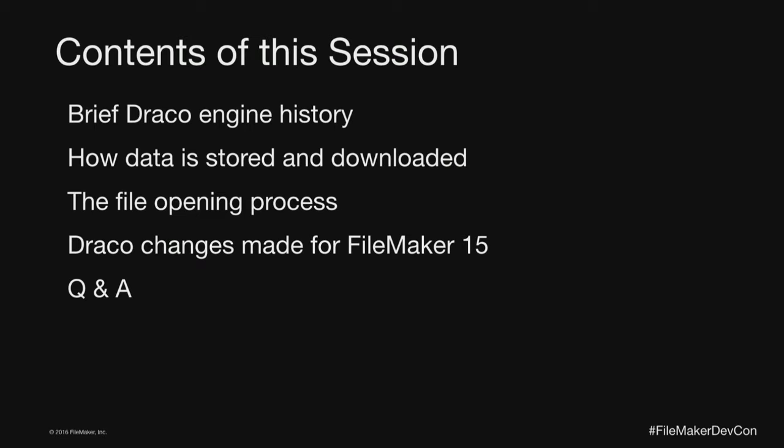For the contents of this session, I'm going to first go through a brief history of the engines inside FileMaker — starting with what was before Draco and the Draco engine after that. Then I'll talk about how data is stored and downloaded, how it moves around in the system. Then go through the file opening process — all the steps when you open a file over the network. At the end, I'll go through the changes made in the Draco engine for version 15, and then do a Q&A.